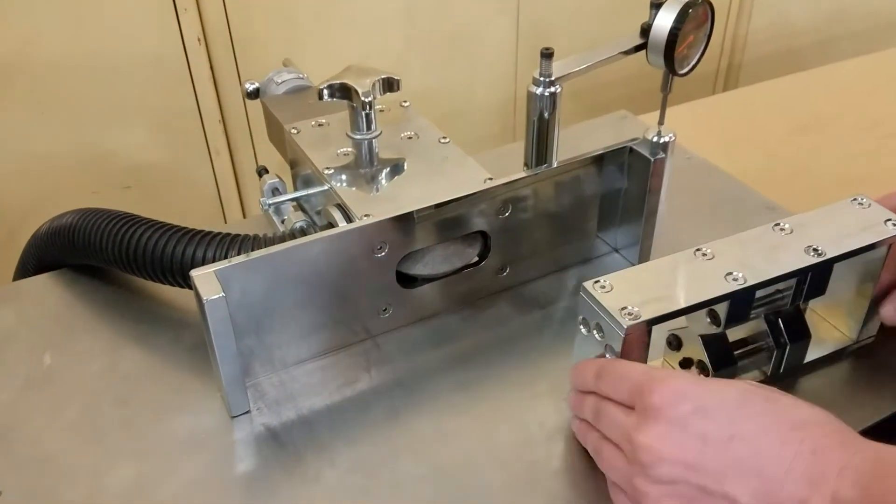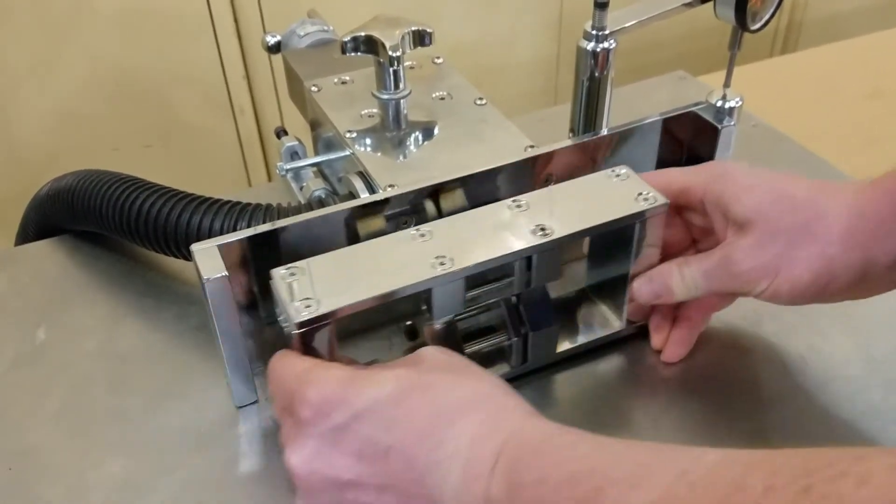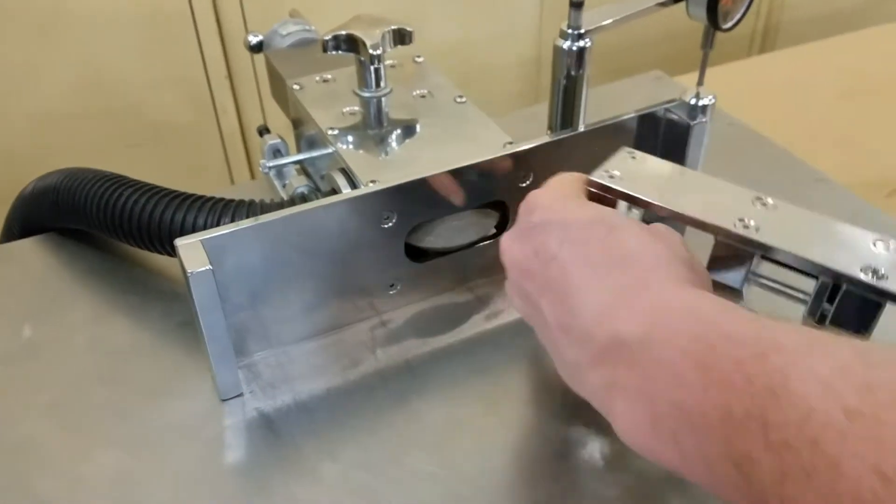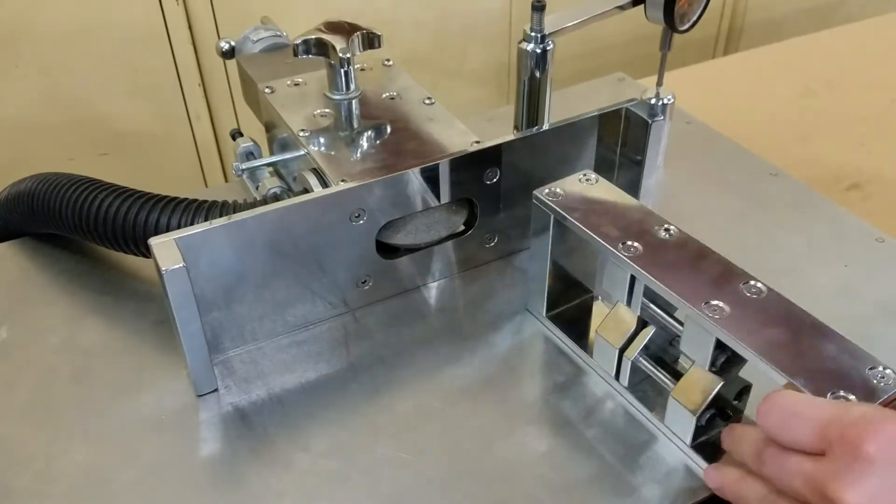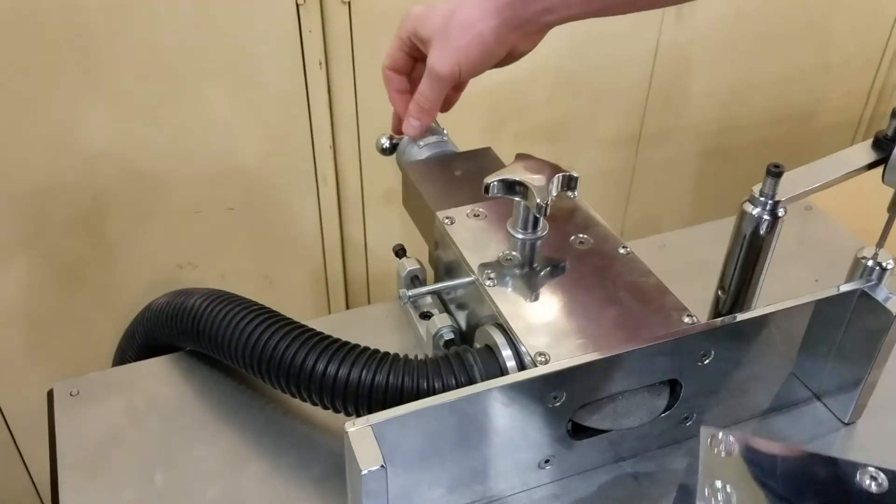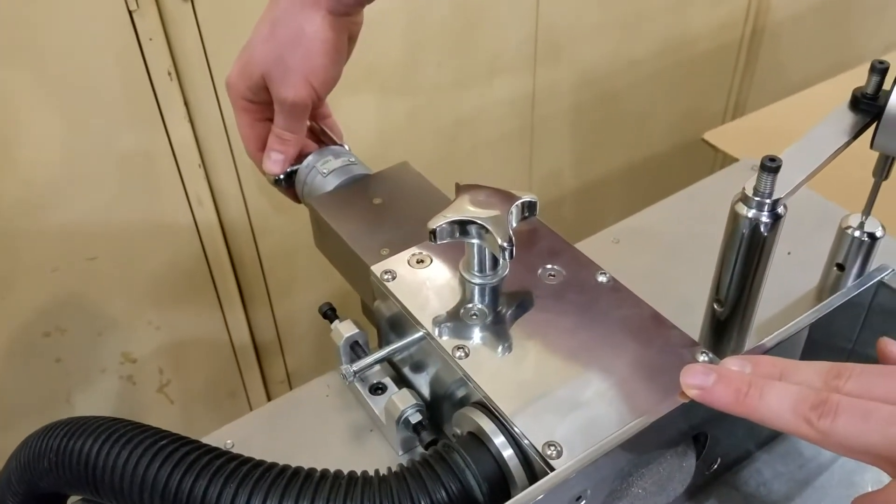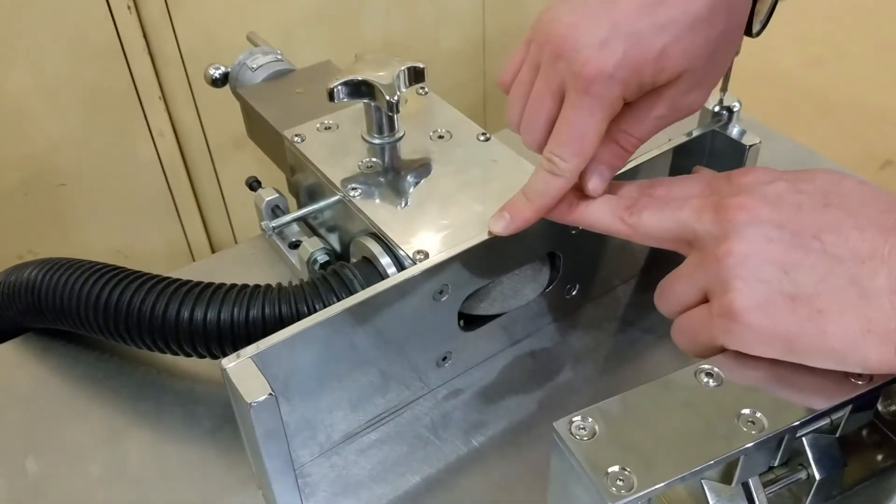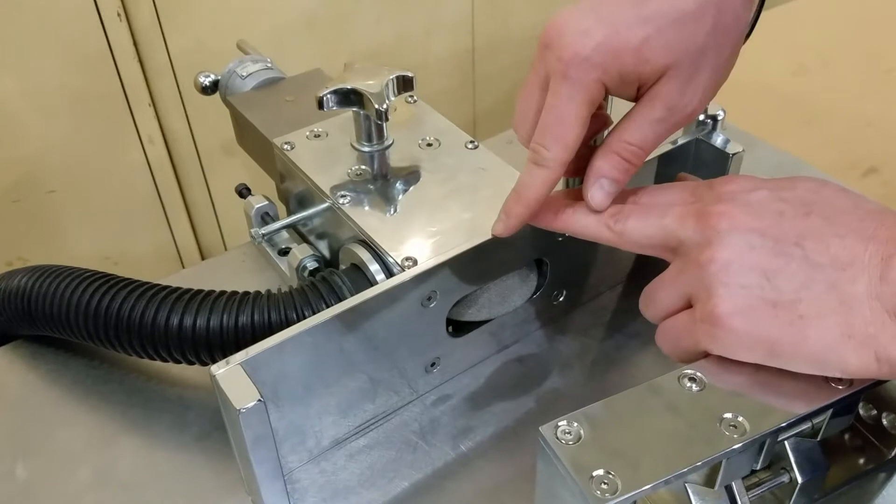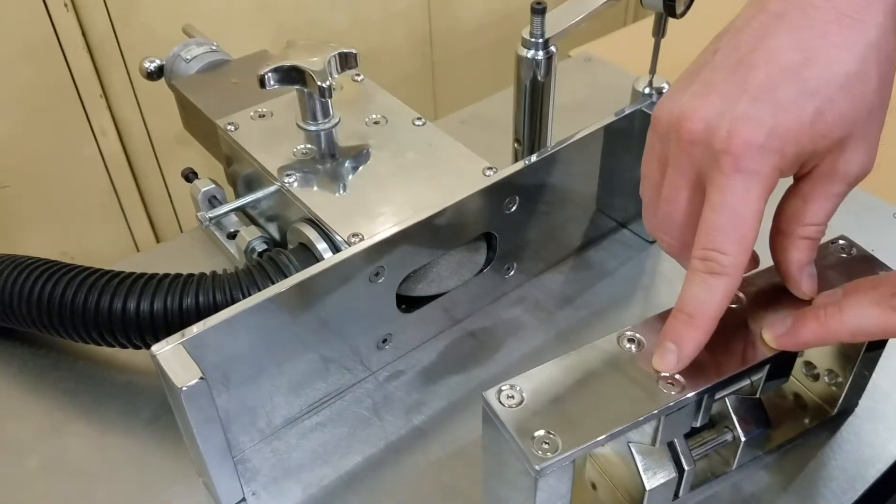Secondly, you have your cutter wheel here and your template simply goes back and forth. You go across, flip your template around, and go back across. Then you move the body of the machine by turning the guide at the back. The guide is set up with a pin to stop at the proper depth for your sample.